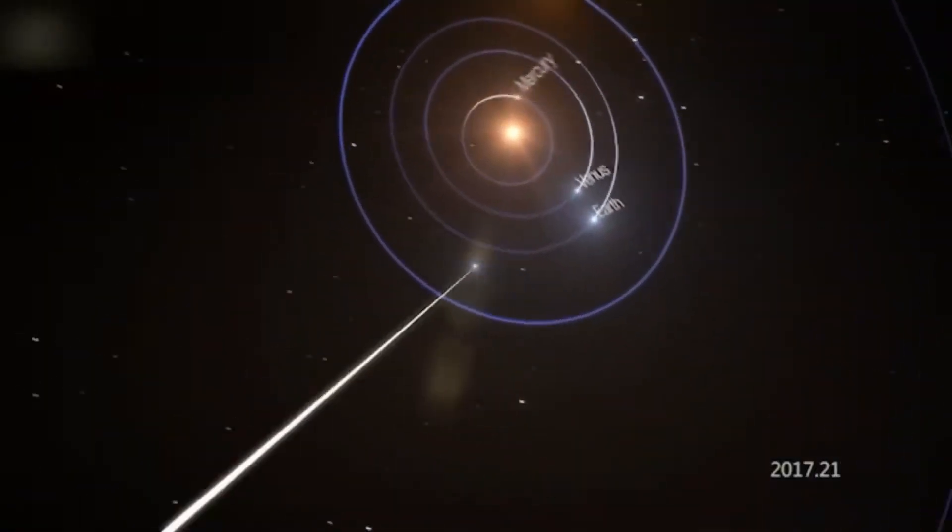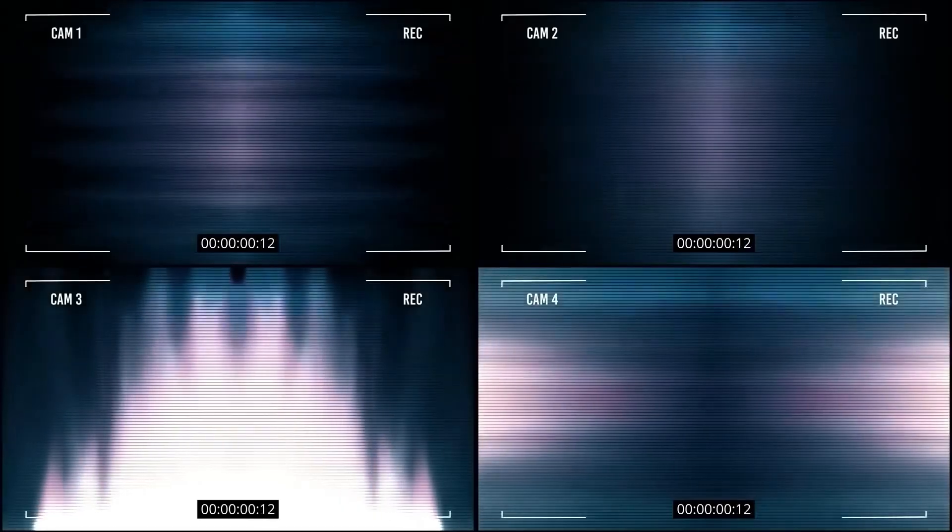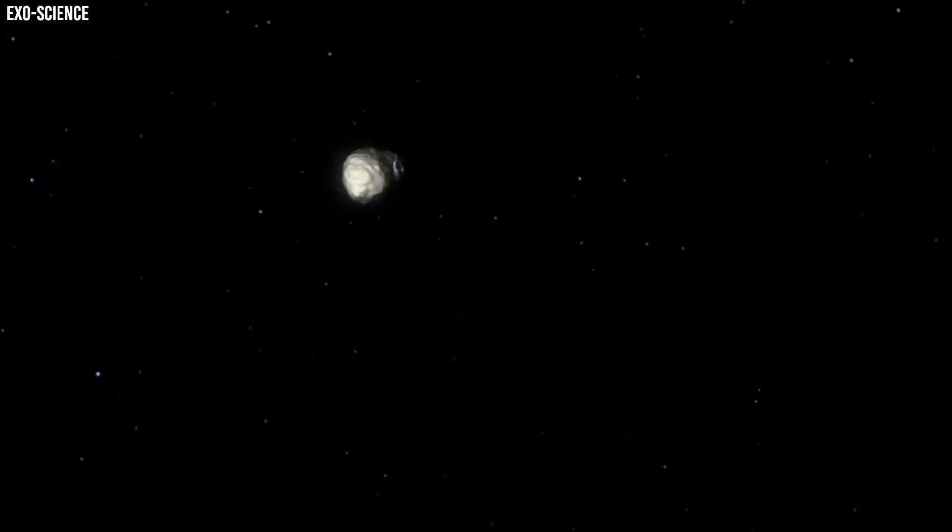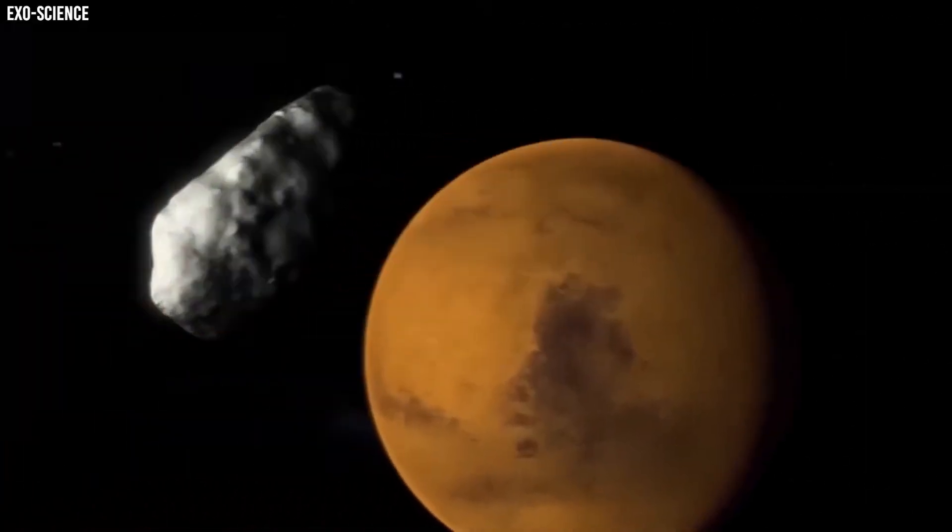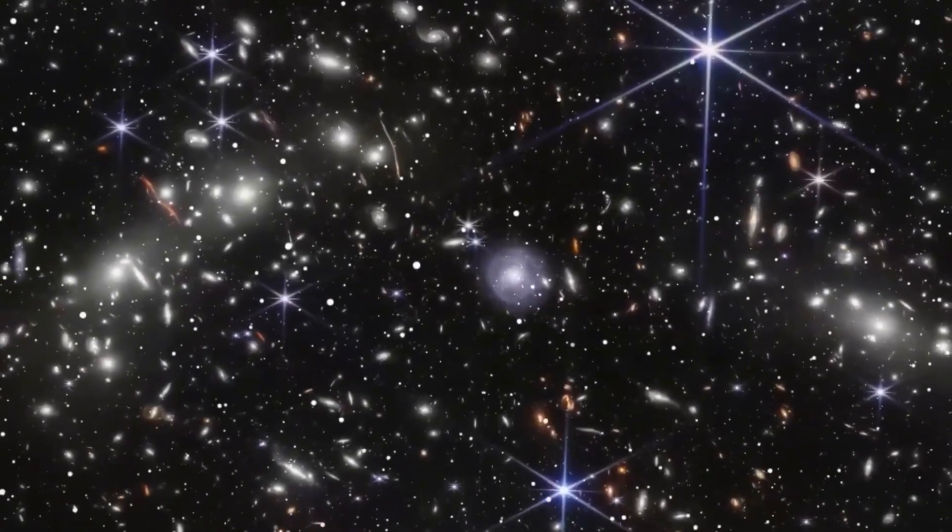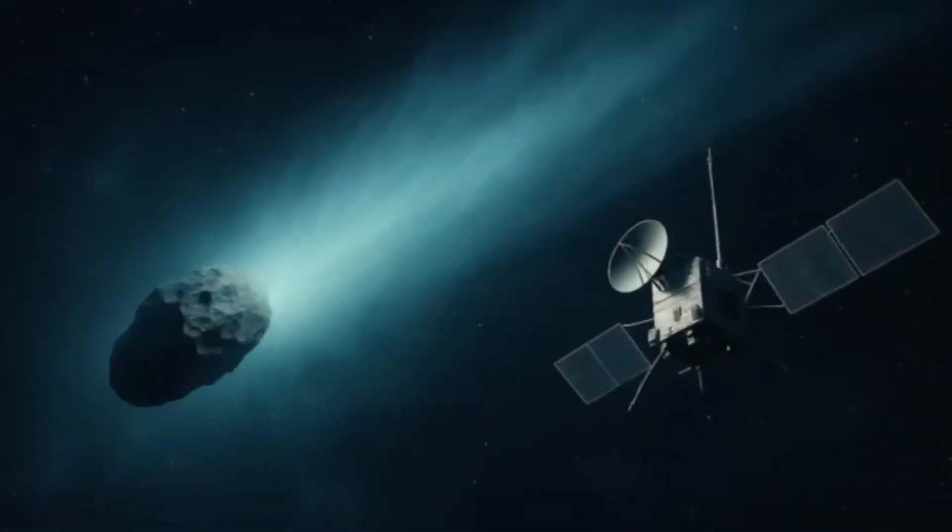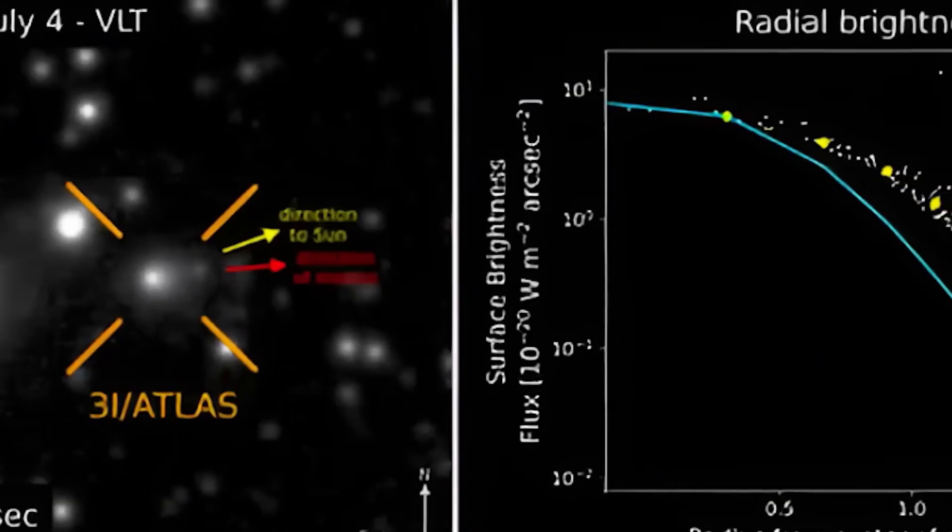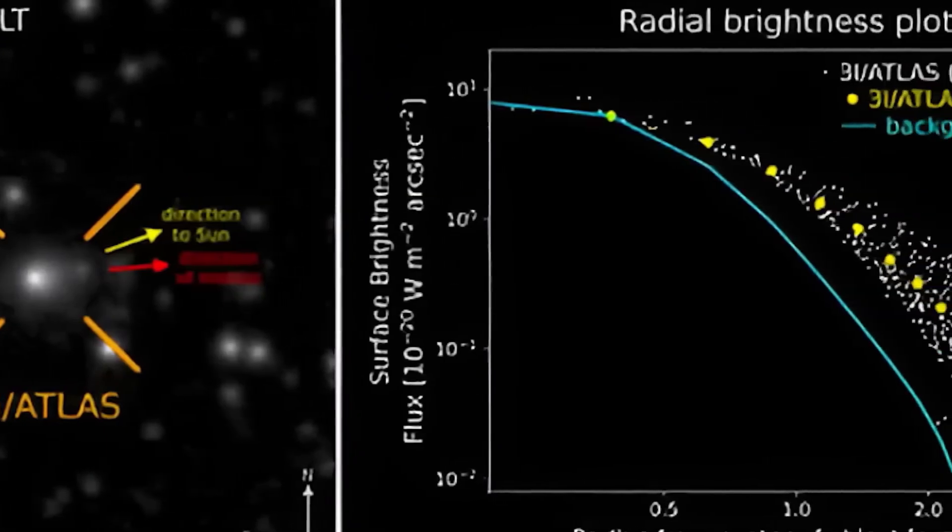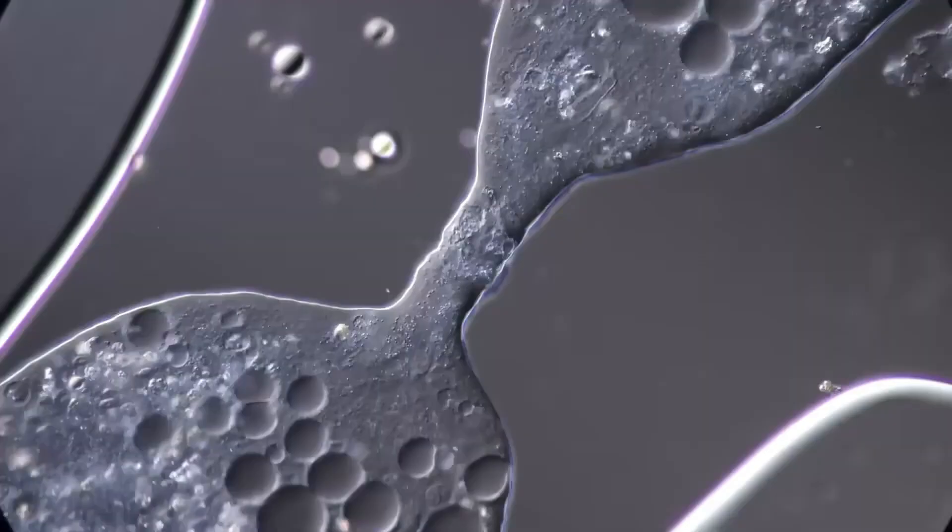That changed when a researcher made what seemed like a minor calibration adjustment, instructing the system to analyze signals over longer continuous windows instead of treating each short burst independently. That one shift broke the mystery open. Instead of isolated transmissions, the AI began identifying coherent conversations.